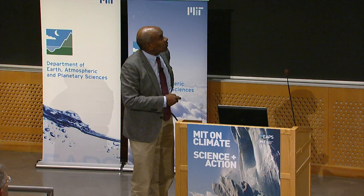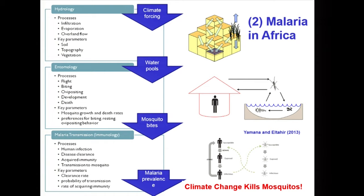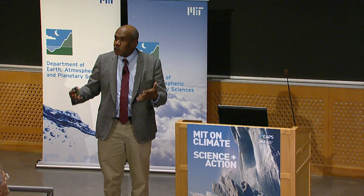Another example is infectious diseases. Work at MIT developed a new class of models simulating processes linking climate forcing, hydrology, entomology, and immunology — the human immune system viewed as an integrated measure of past climate variability. These models were used to simulate the impact of climate change on malaria transmission in Africa. Interestingly, climate change shows less risk for malaria expansion: warming reduces mosquito survival, since mosquito survival is a strong function of temperature, so warming means fewer mosquitoes and potentially less malaria.